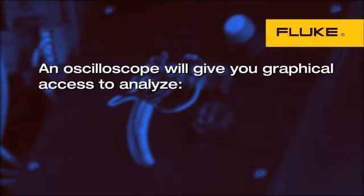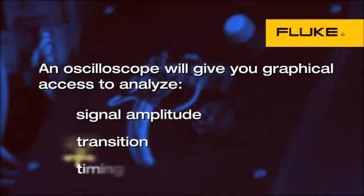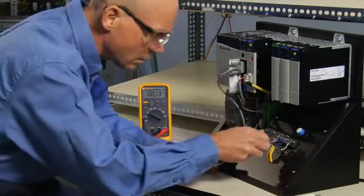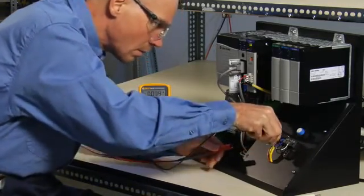An oscilloscope will save you hours of trial and error by giving you graphical access to analyze signal amplitude, transition, and time relationship details. In our example, a proximity switch is causing erratic operation in a parts sorting system.